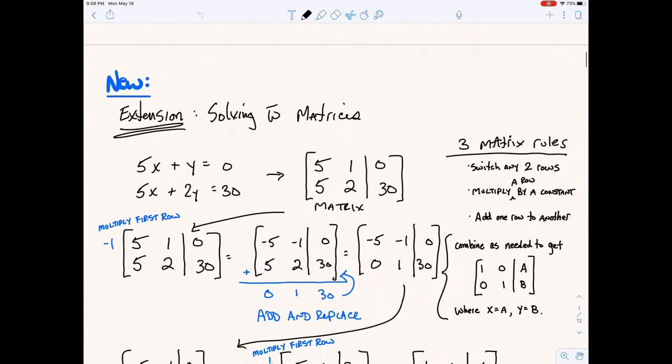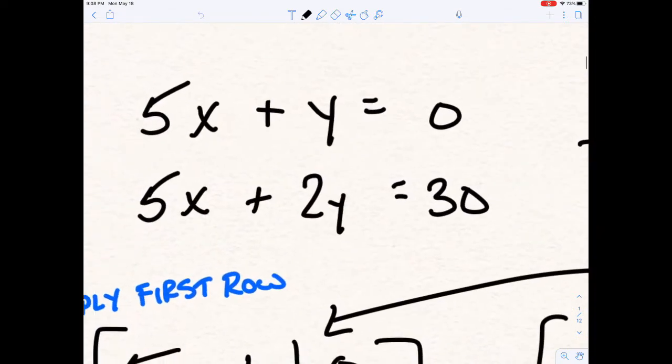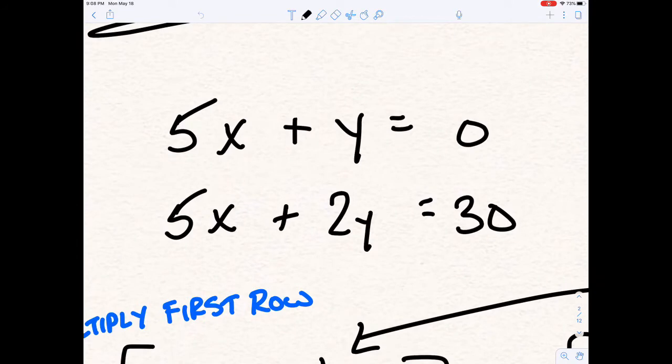So with that idea, here's the idea, right? System of equations: 5x plus y equals 0 and 5x plus 2y equals 30. We want to solve this.